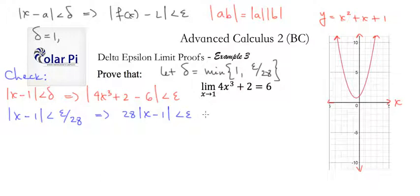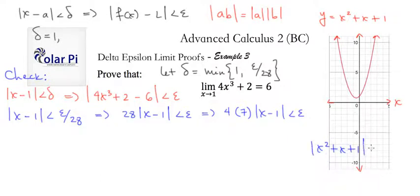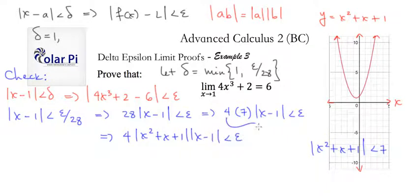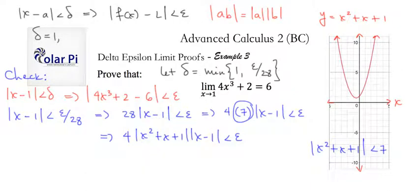If 28 times absolute value of x minus 1 is less than epsilon, then 4 times 7 times absolute value of x minus 1 is less than epsilon. But we said that absolute value of x squared plus x plus 1 is less than 7, so I could write 4 times absolute value of x squared plus x plus 1 times absolute value of x minus 1 is less than epsilon. Since 4 times 7 times absolute value of x minus 1 was already smaller than epsilon, replacing 7 with something smaller keeps it less than epsilon.